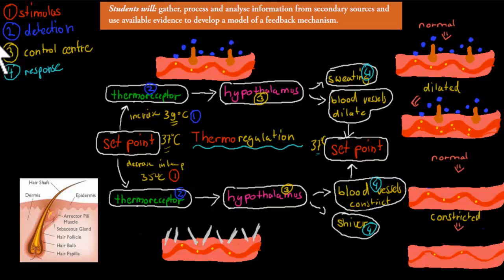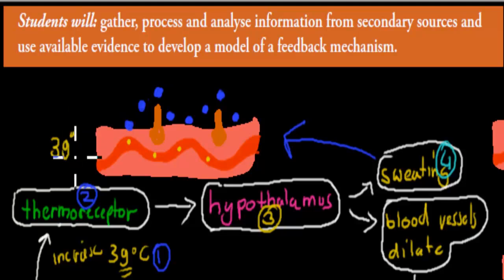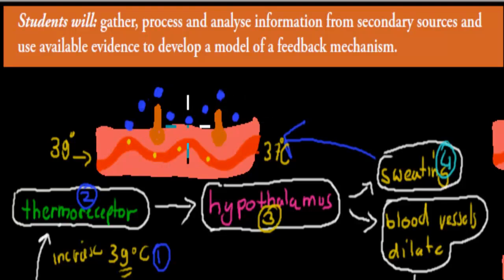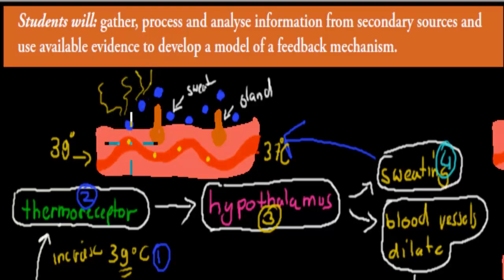So for example, sweating — what does sweating do? You can imagine we have high blood temperature at 39 degrees Celsius going through the blood vessels near the skin. We have sweat glands, and once it gets too hot these sweat particles are produced and they evaporate. These squiggly lines represent things evaporating, and this cools the skin and the blood vessels beneath it. So it goes from 39 degrees Celsius down to 37 degrees Celsius — that's how sweating works.